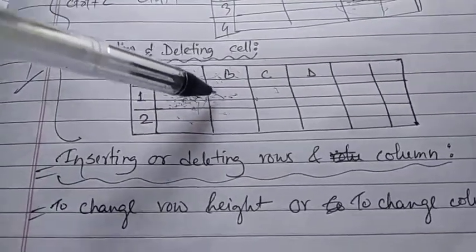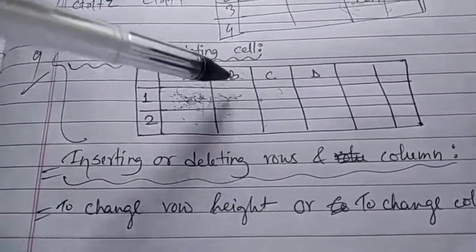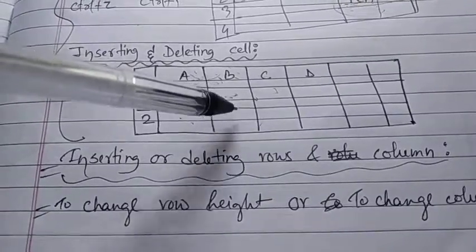Similarly, if you want to delete column B, right-click on any cell, click on delete column. The entire column will be deleted.